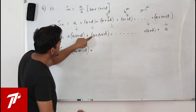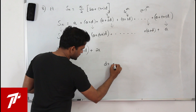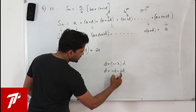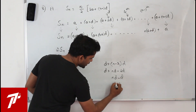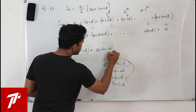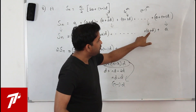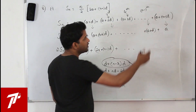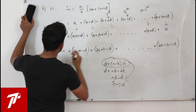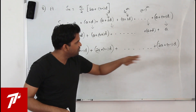Let's move on. Adding the second pair: a plus d plus a plus n minus 2 into d. Simplifying: 2a plus d plus n minus 2 into d equals 2a plus nd minus d equals 2a plus n minus 1 into d. So every pair of corresponding terms gives the same result: 2a plus n minus 1 into d, and this holds all the way through, including the nth term pair.